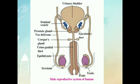This is the diagram of the male reproductive system of a human. In this there is urinary bladder, seminal vesicle, prostate gland, vas deferens, Cowper's gland, urinogenital duct, epididymis, scrotum, testis, penis, and ejaculatory duct.